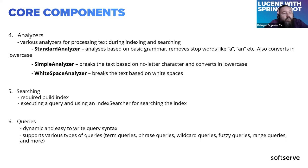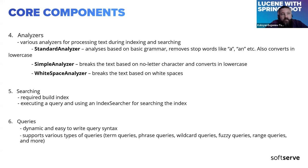The next core component is the analyzer. Analyzers are used for processing text during indexing and searching. In Lucene, we have three analyzers. The standard analyzer is based on basic grammar — it removes connecting words like 'a', 'an', 'the', and converts words to lowercase. The simple analyzer also converts words to lowercase but breaks the text based on non-letter characters. The whitespace analyzer breaks the text based on whitespaces. All three analyzers are triggered in sequence using interceptors, so everything happens under the hood without our interaction.